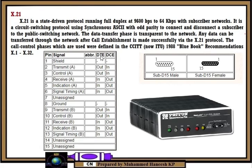Here is the pin signal and DTE/DCE specification. Pin 1 is the shield — there is no DTE/DCE specification. Pin 2 is transmit A, with DTE out and DCE in. Pin 3 is control A, a control signal — DTE out and DCE in. Pin 4 is receive A signal — DTE in and DCE out. Pin 5 is the indication signal — DTE in and DCE out. Pin 6 is signal timing A — DTE in and DTE out. Pin 7 is unassigned with no specifications.